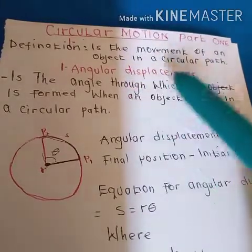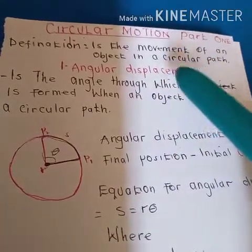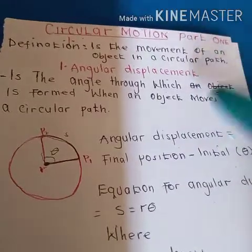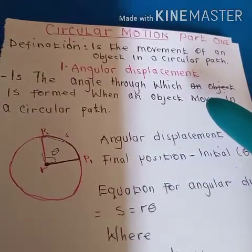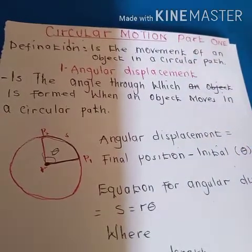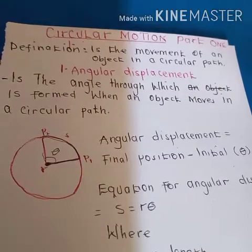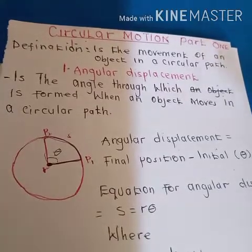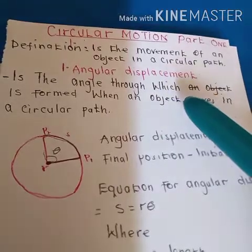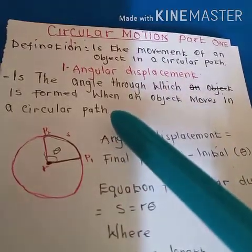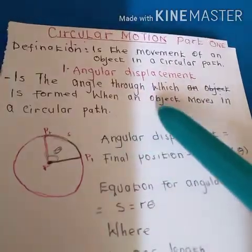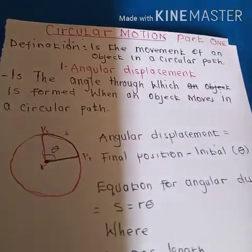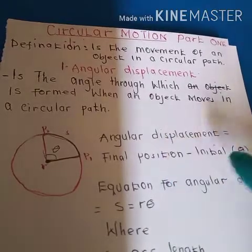The movement of an object in a circular path. The movement of an object in a circular path. In circular motion, the angular displacement is the angle through which an object moves in a circular path.